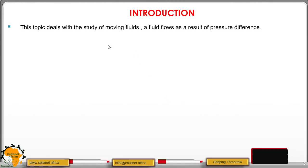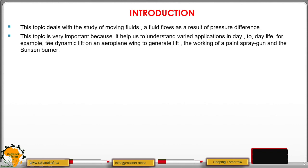This topic basically deals with the study of a moving fluid. And the fluids are gases and liquids. And fluid flows as a result of pressure difference. This topic is very important because it helps us to understand varied applications in day-to-day life. For example, the dynamic lift on an aeroplane wing to generate lift, or how the aeroplane is able to get lifted. Then, we have the working of the paint spray gun, and also the Bunsen burner.